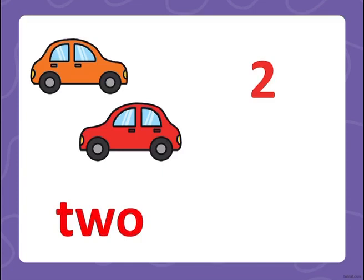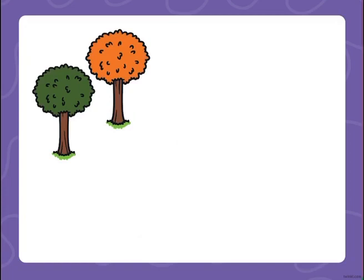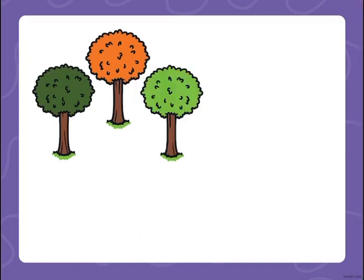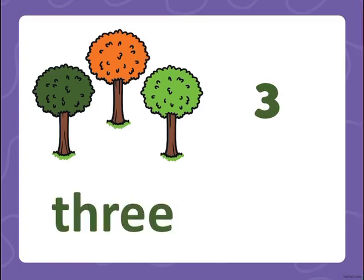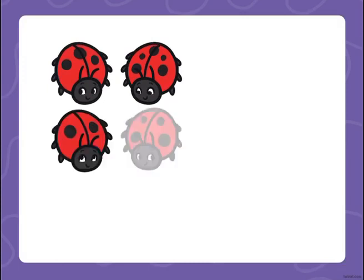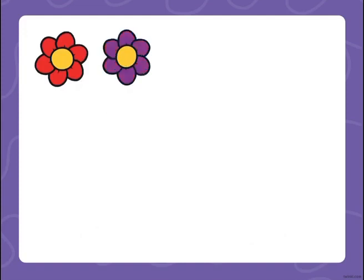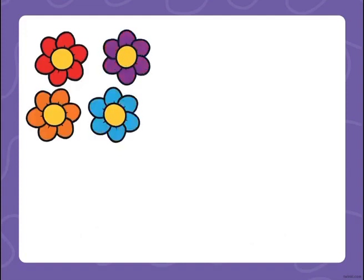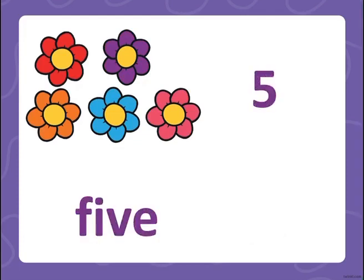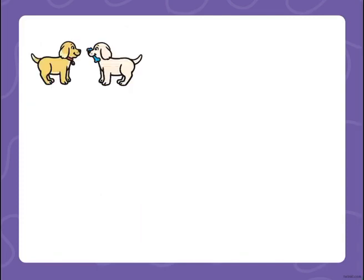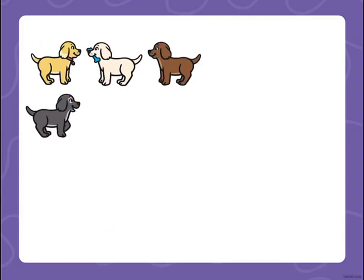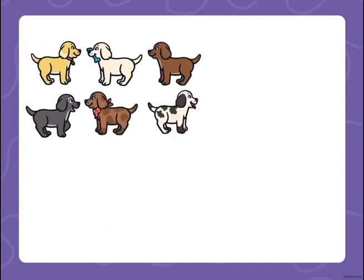One, two, three — we have here three. One, two, three, four — we have here four ladybugs, so it's four. One, two, three, four, five — we have here five flowers.